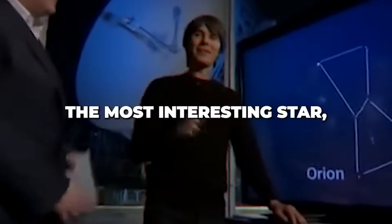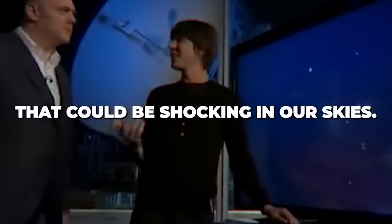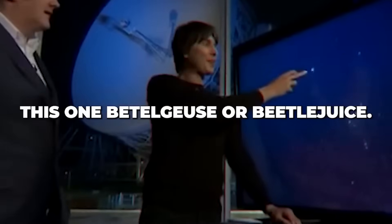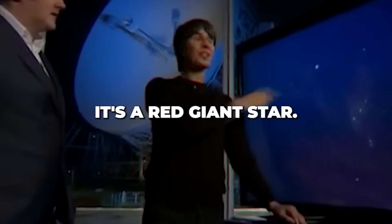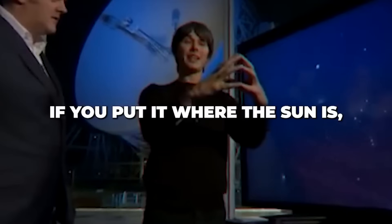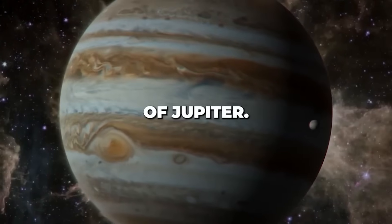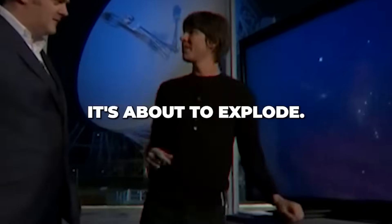If we take the lines away, the most interesting star, I think, the star that could be shocking in our sky is this one, Betelgeuse. It's a red giant star. If you put it where the sun is, it would extend out to the orbit of Jupiter. It's enormous, very unstable, and about to explode.